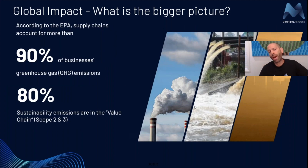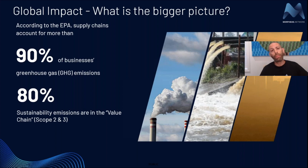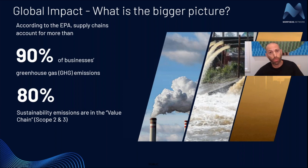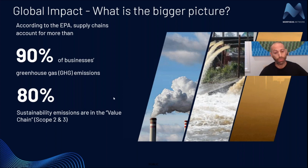What is the global impact? Do we care so much if businesses make more money and ship things faster? Obviously we do if you're running a business, but the result is that 90% of all businesses' carbon emissions are in their supply chain. That means if we cut down supply chain inefficiencies, we're cutting down a huge percentage of carbon emissions in the world. This is the number one problem to solve for carbon emissions. On top of that, 80% of those emissions are not in a company's direct control — those are scope two and three, in their value chain. It really takes a lot of technology to trace all that activity and all those carbon emissions.